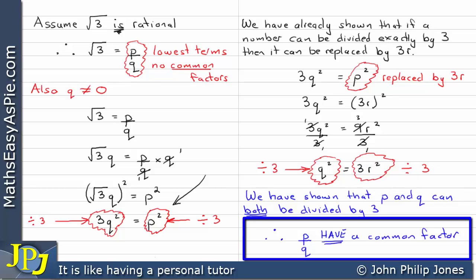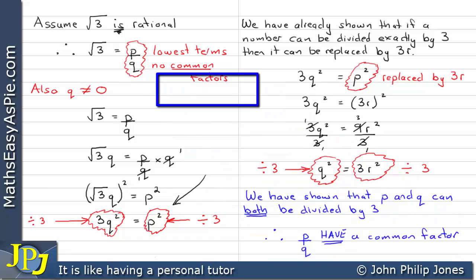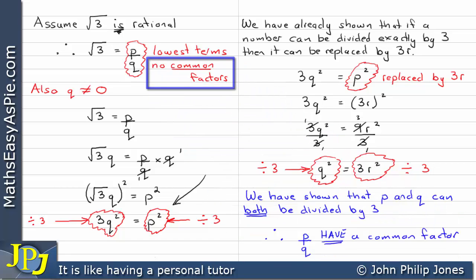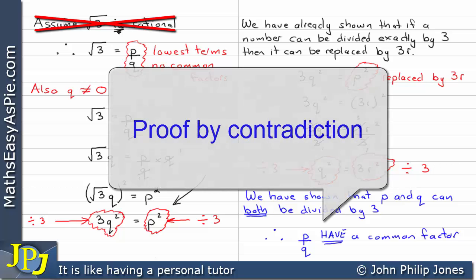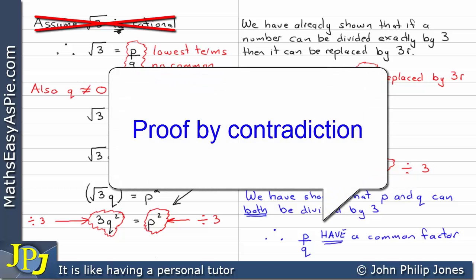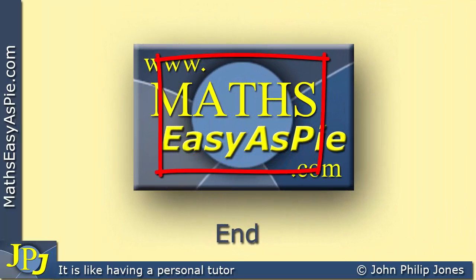This contradicts our original assumption that √3 is rational and that p/q is in its lowest terms with no common factors. Starting from that assumption and following the logic, we have shown that p and q do in fact share a common factor of 3. Consequently, the square root of 3 is not a rational number — it is an irrational number. We have proved this by proof by contradiction.